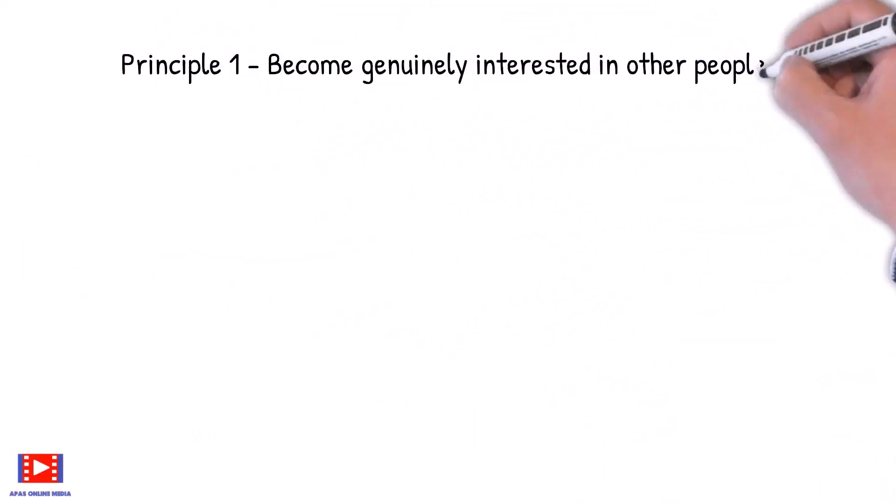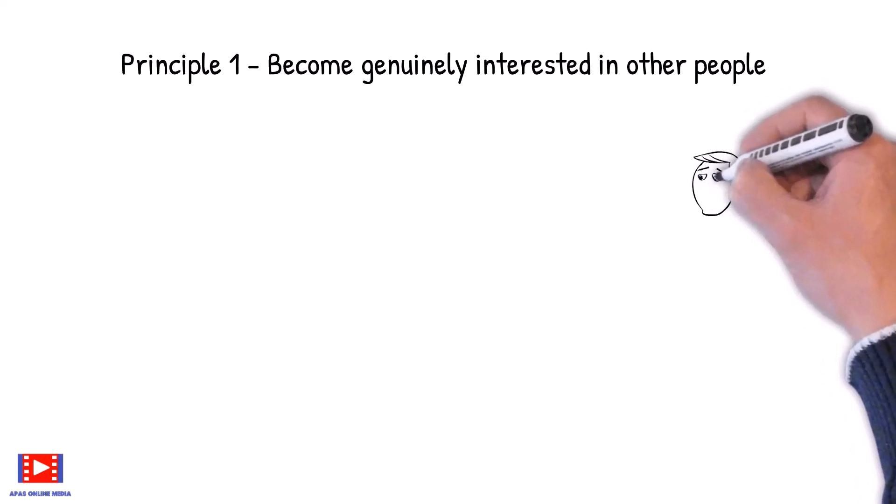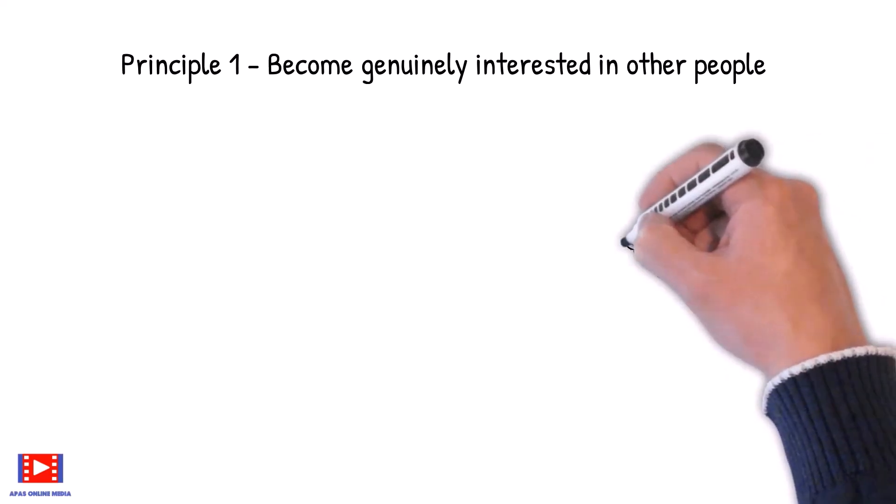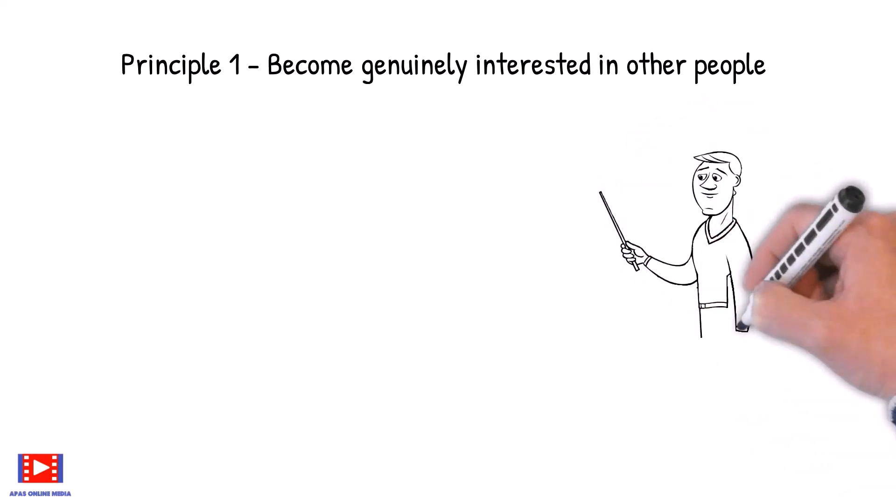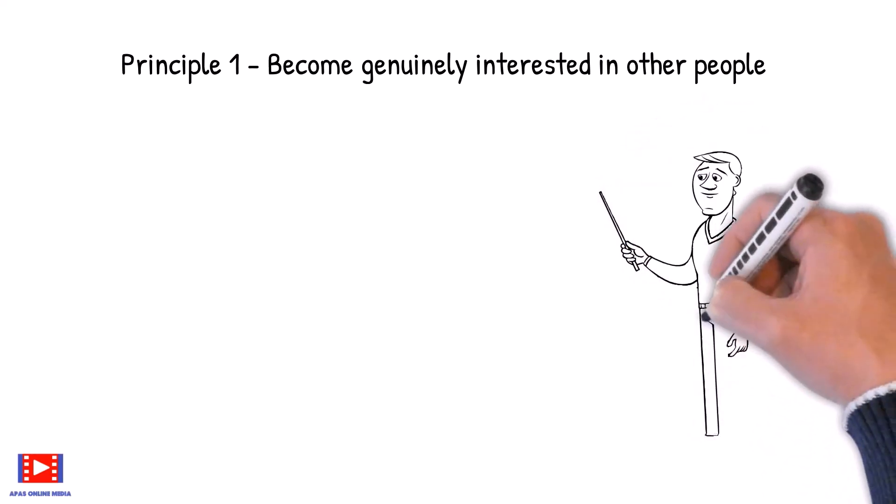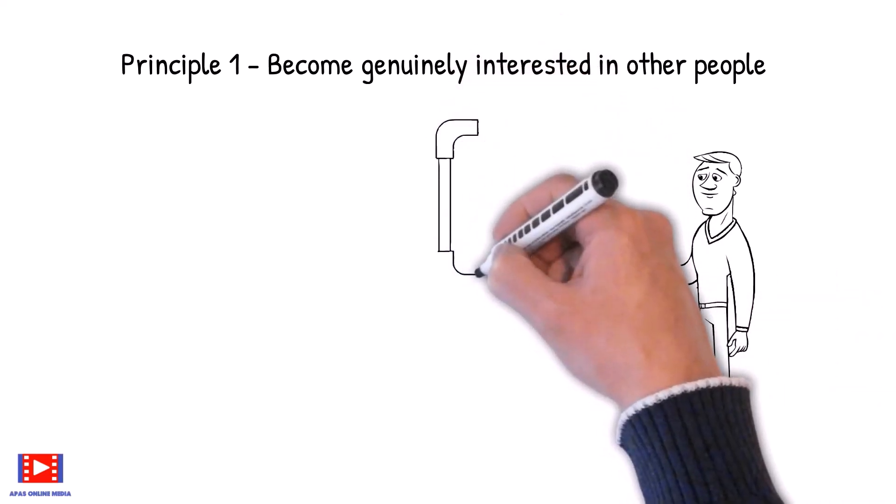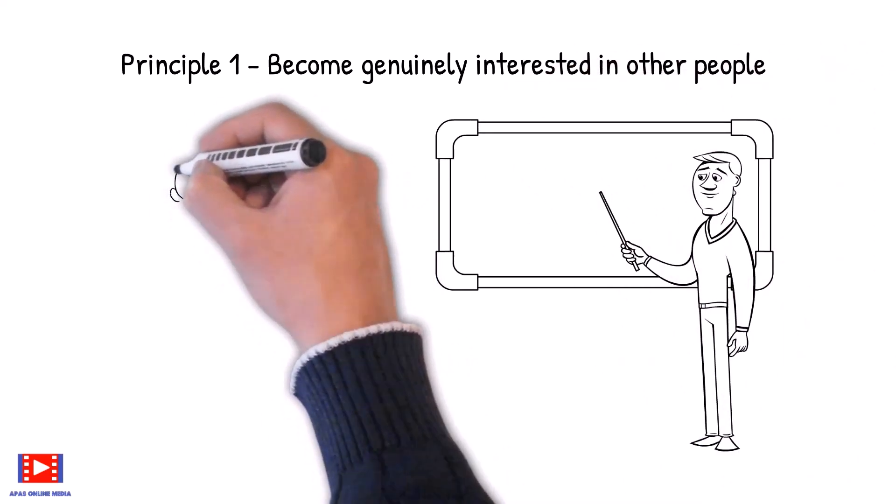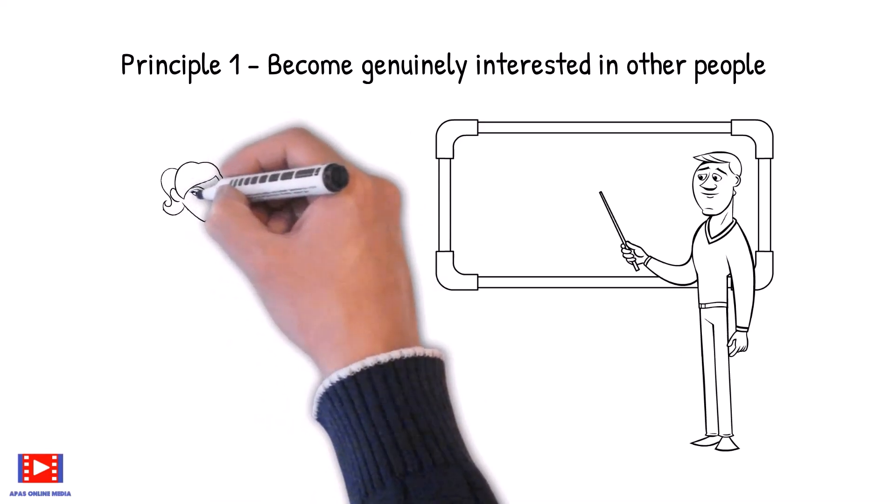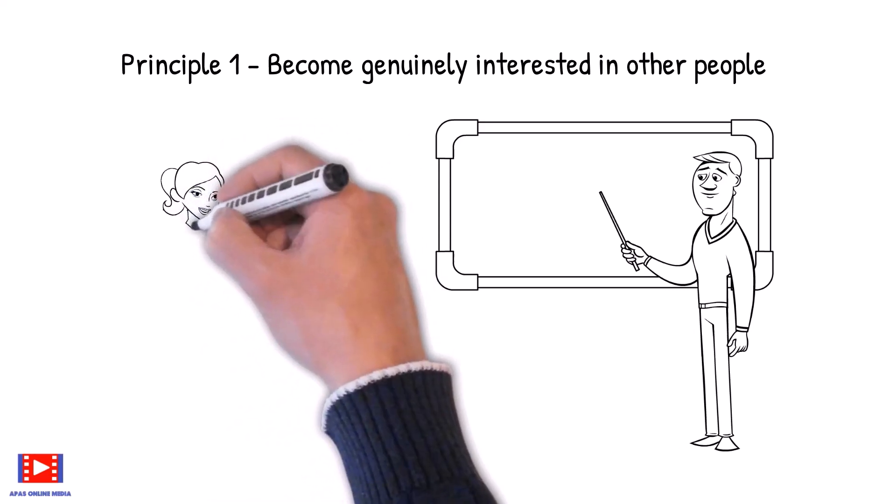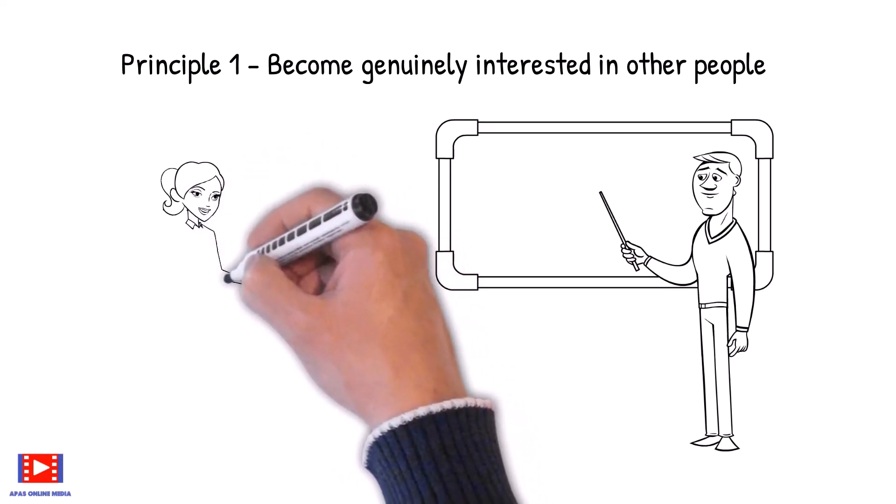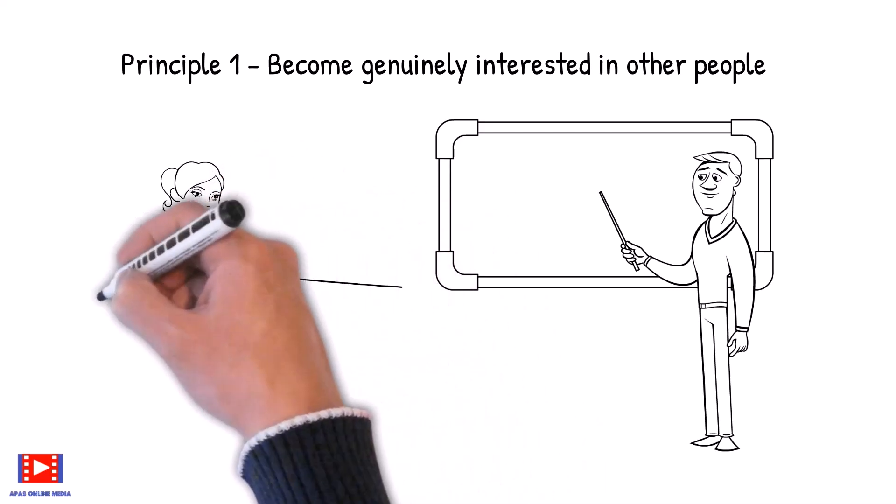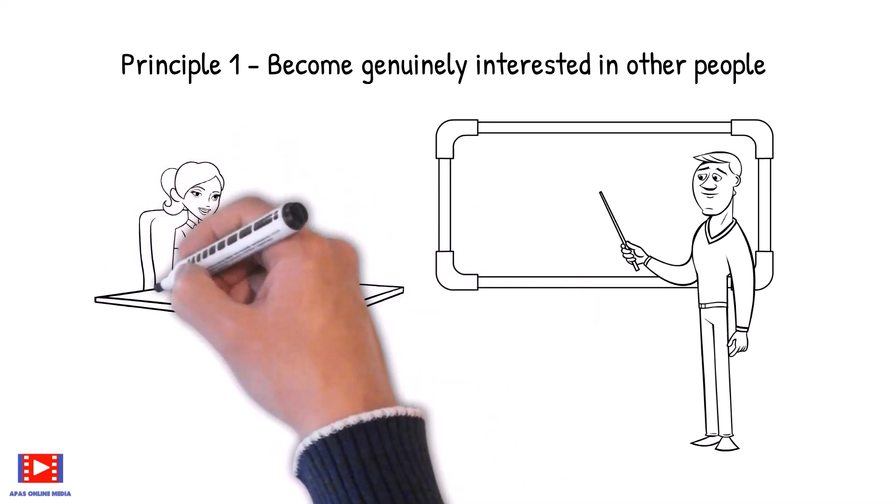Principle 1: Become genuinely interested in other people. In today's world it is important to have good communication with your friends, family, colleagues and relatives. To be able to do that, you need to be genuinely interested in their interests. If we want to make friends, let's put ourselves out to do things for other people - things that require time, energy, unselfishness and thoughtfulness.